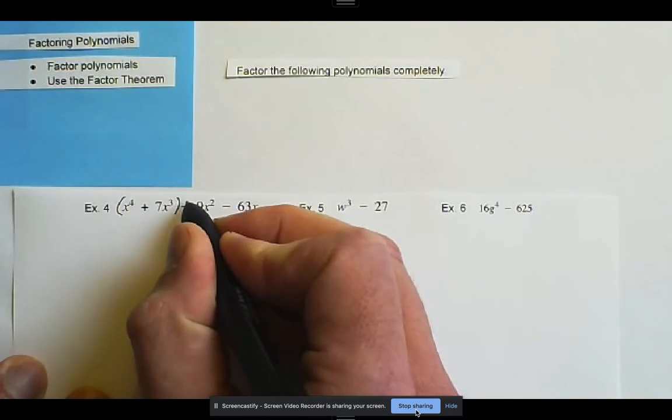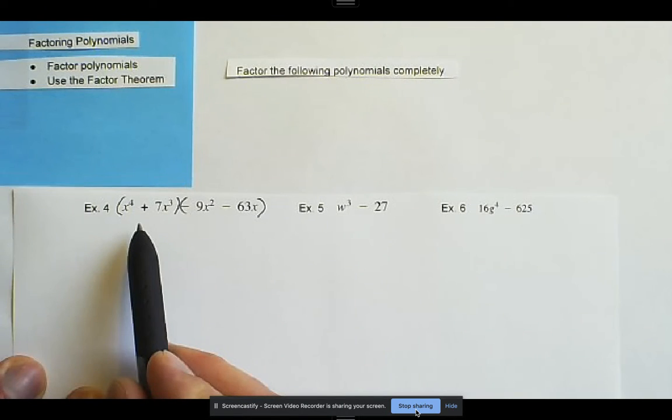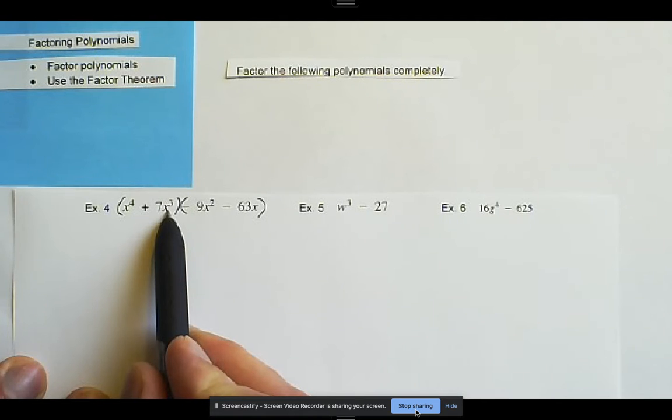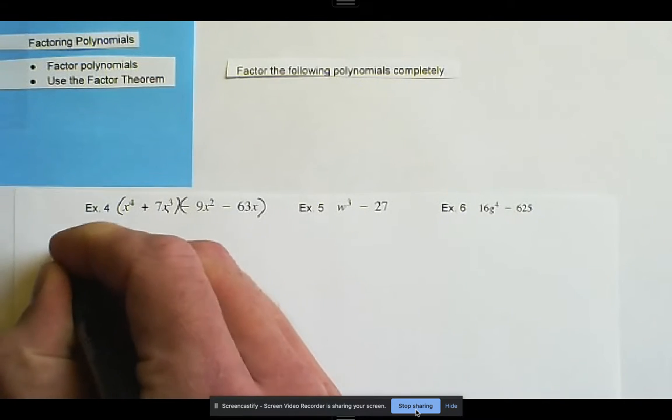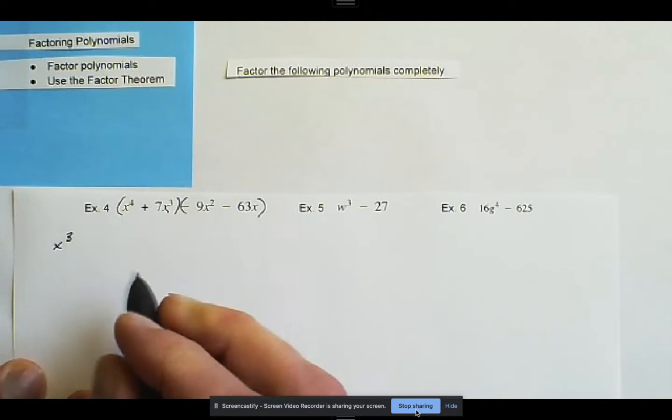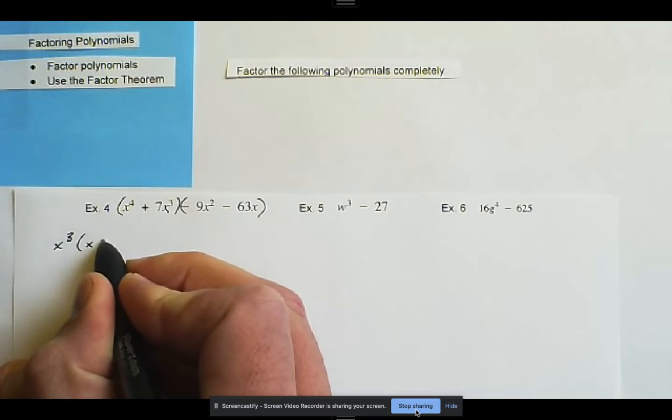So right away I'm thinking that we're going to factor by grouping. So we're going to make two groups, and in the first group, we see that we have x to the fourth and x to the third.